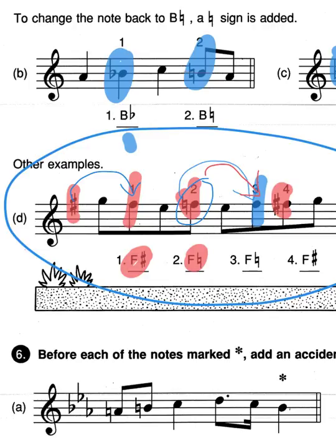To make this an F-sharp again, as per the key signature, you actually have to put the sharp in to cancel out the F-natural, which was over here.